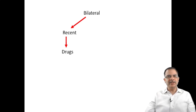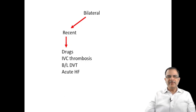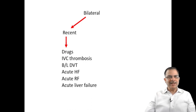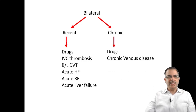Bilateral swelling of recent onset is mainly due to drugs — such as calcium channel blockers or antihypertensive drugs — inferior vena cava issues, chronic venous insufficiency, lymphedema, or thrombosis. The more proximal the site of thrombosis, the greater the chances of bilateral swelling, including bilateral DVT, acute heart failure, acute renal failure, or liver failure.